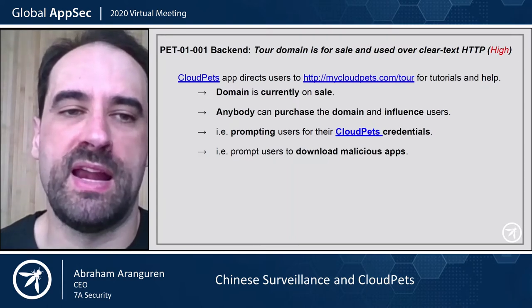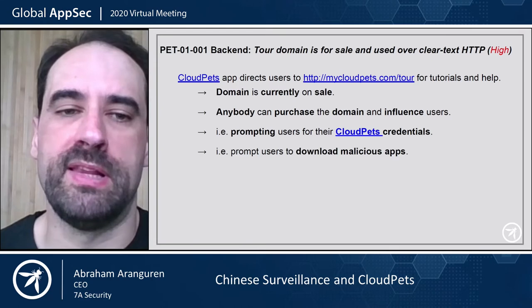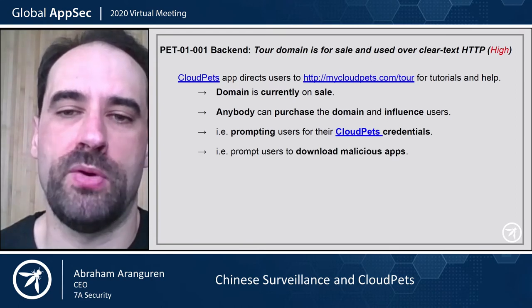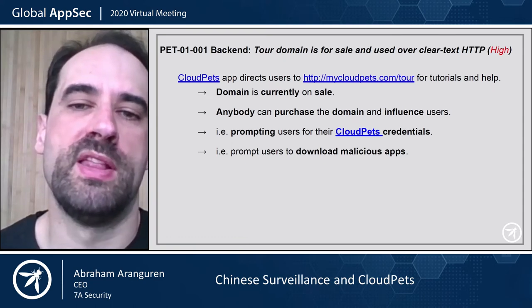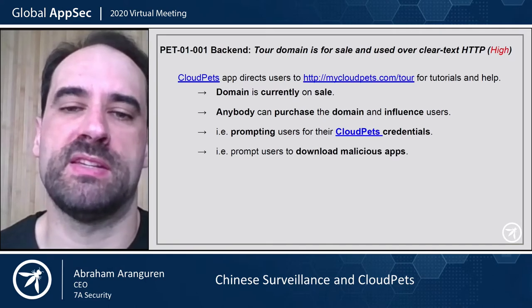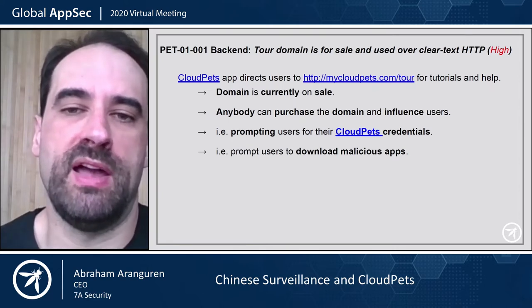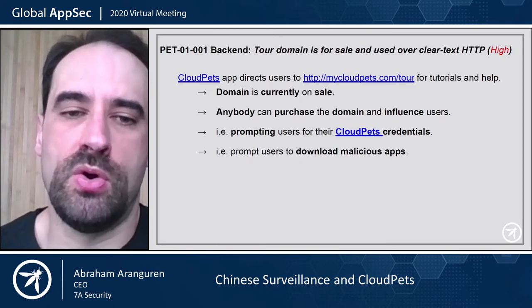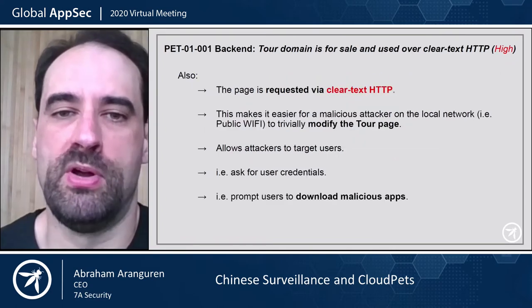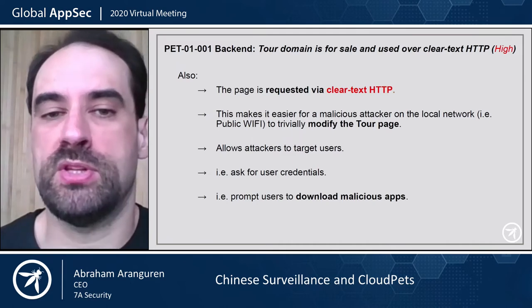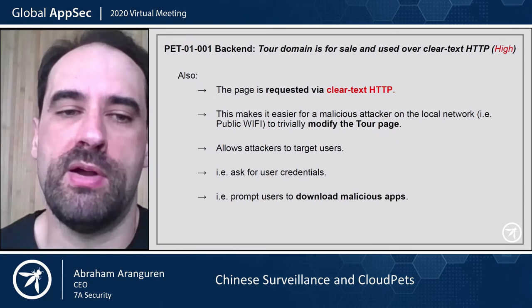The first thing we found was that the CloudPets app directs users to a cleartext HTTP domain. The domain is currently on sale, so anybody can purchase the domain and influence users. It's bad already that it uses cleartext HTTP, but it's even worse that the domain is for sale, because anybody can buy it and prompt users for credentials on this page, take over accounts, or prompt users to download malicious apps. The page is requested over cleartext HTTP, so anybody on a public Wi-Fi could potentially change it and replace it with anything else.